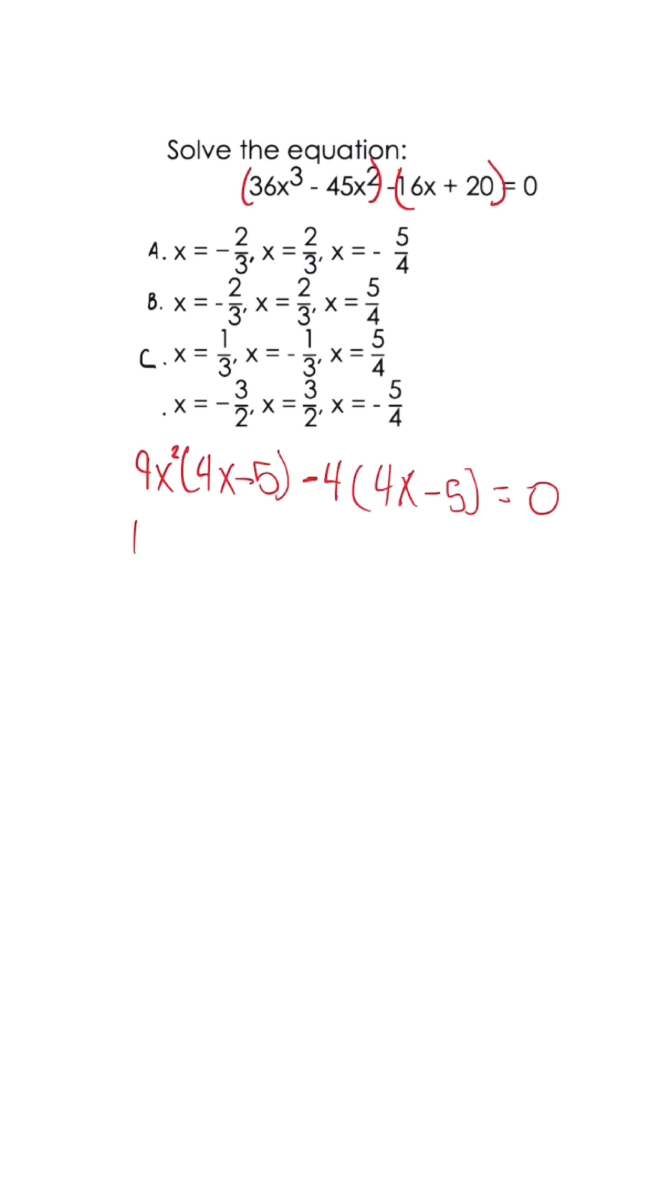When we combine our terms, we have 4x minus 5 equals 0 for our first factor, and the second one is 9x² minus 4 equals 0.